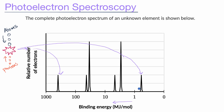We can analyze this to come up with the electron configuration of this mystery element. Pause this video and try to think about that. This spike on the far left would correspond to detecting the innermost electrons — the 1s electrons. And we know those aren't the only electrons, because there are electrons with lower binding energies, so we know we would have filled up that innermost shell. So we know they have two 1s electrons.